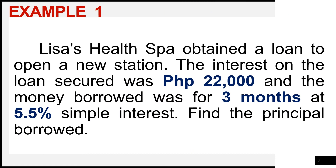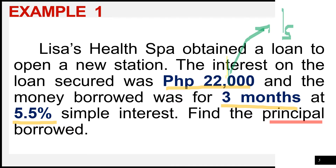Here is example number one. Lisa's Health Spa obtained a loan to open a new station. The interest on the loan secured was P22,000 and the money borrowed was for three months at 5.5% simple interest. Find the principal borrowed. We are asked to identify the value of the principal. P22,000 is our IS, three months is our term, and since our term is in months, we need to convert it into years. The simple interest rate is 5.5%.